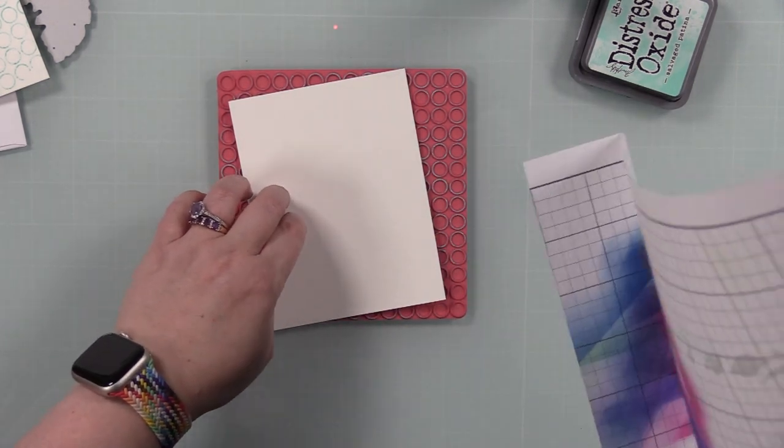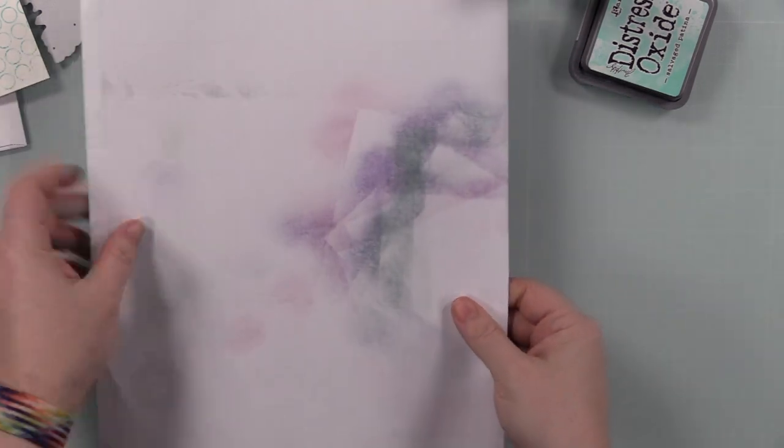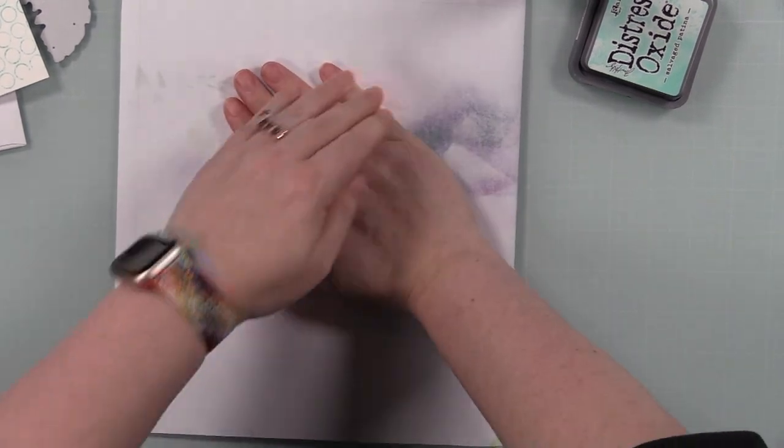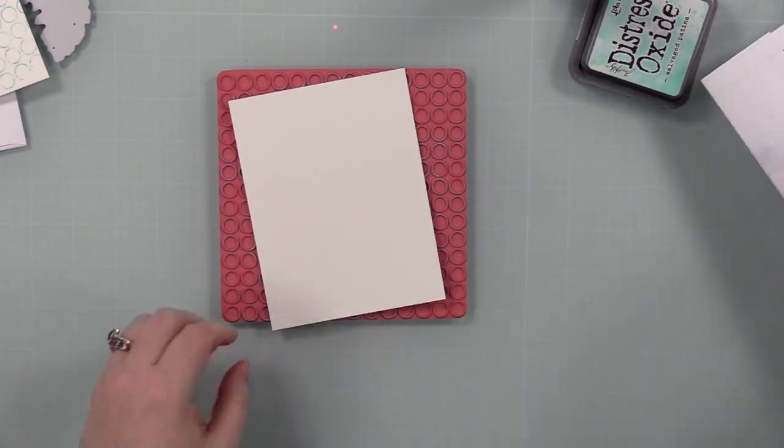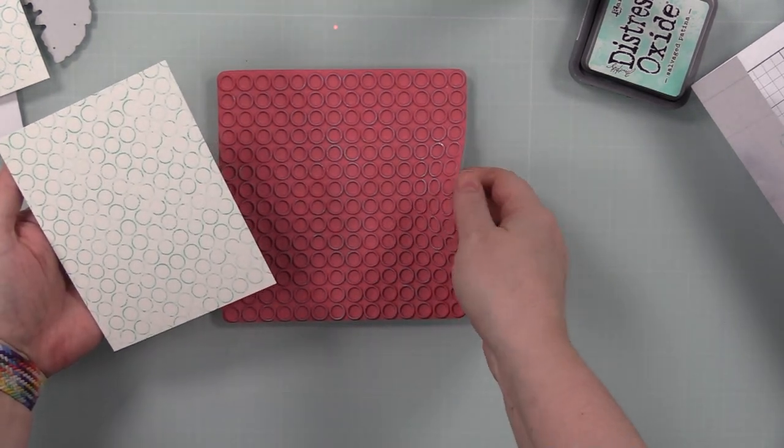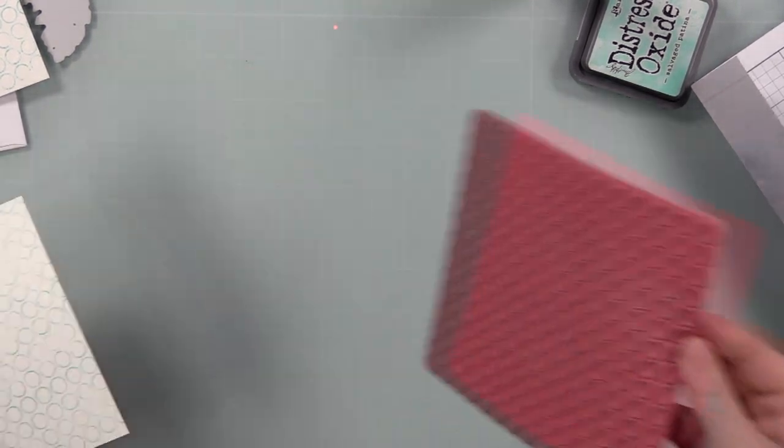I inked up the stamp, then pressed a piece of A2 sized white cardstock, four and a quarter by five and a half, which I applied on an angle because perfection is overrated. I want these backgrounds to be a little bit messy, a little bit of texture, a little bit of geometric pattern.